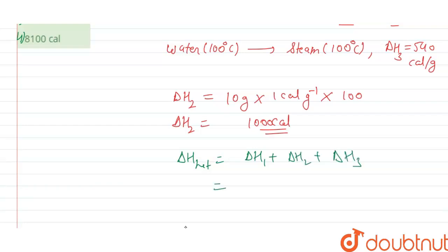Delta H1 is 80 calorie per gram, but here 10 gram of substance is given, so multiply by 10. Plus delta H2 which is 1000 calorie, plus delta H3, 540 calorie per gram, multiplied by 10 gram. Gram to gram cancels throughout.